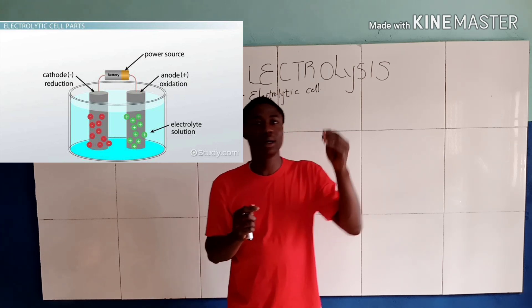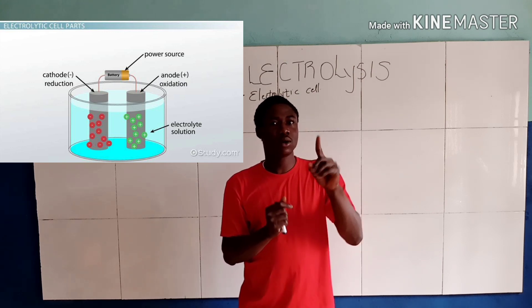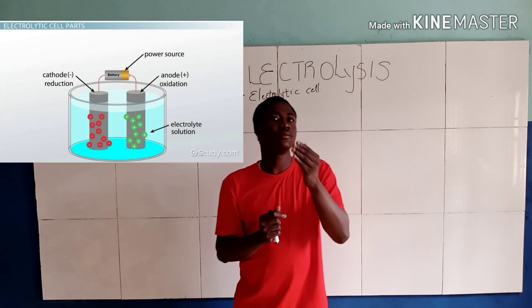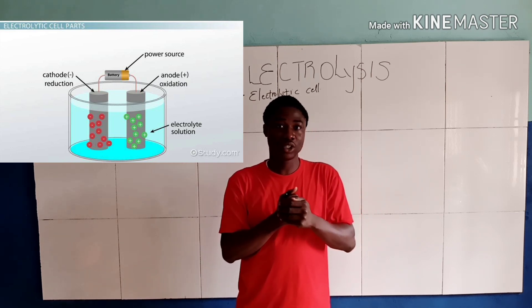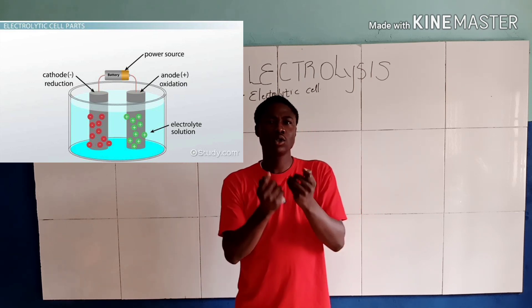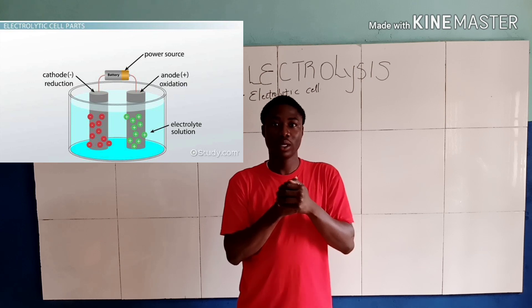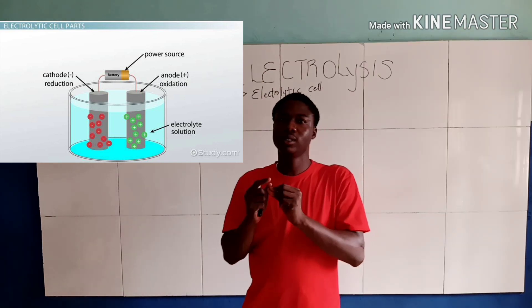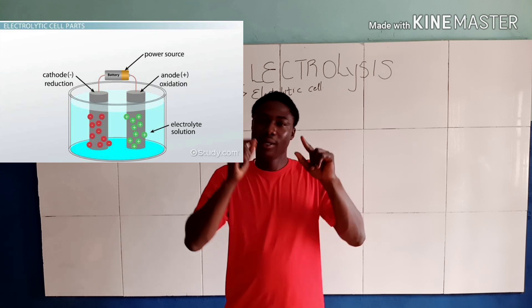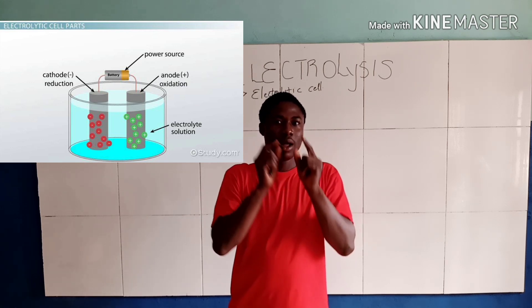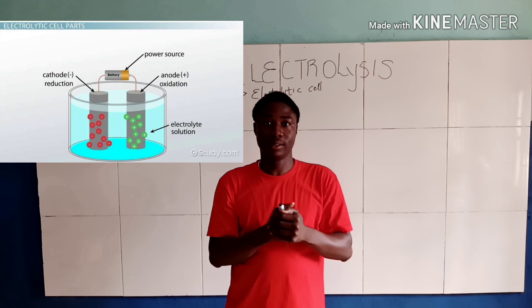Going further to talk about an electrolytic cell: an electrolytic cell involves the conversion of electrical energy to chemical energy, and it requires current. Lastly, for an electrolytic cell, the electrodes in this cell occur in the same compartment.